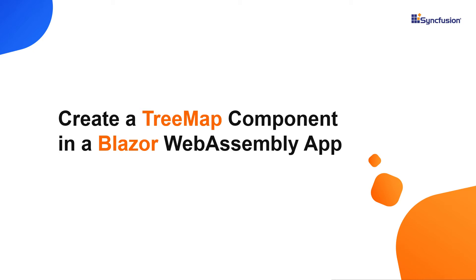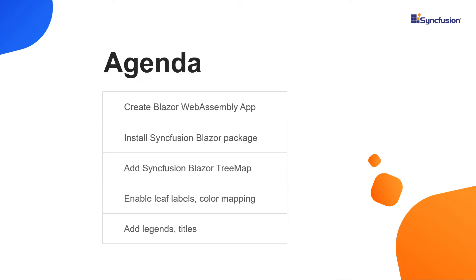Welcome to this video on getting started with the Treemap component of Syncfusion in a Blazor WebAssembly application. I will explain how to create a Blazor application and add the Syncfusion Blazor package, then show you how to add the Syncfusion Blazor Treemap component. After creating the Treemap component, I will explain how to enable leaf labels, color mapping, legends, and titles. To explore all the features of the Treemap component, visit our website link provided in the YouTube card.